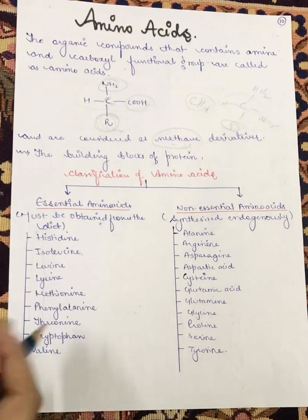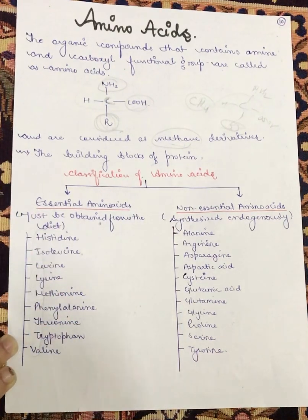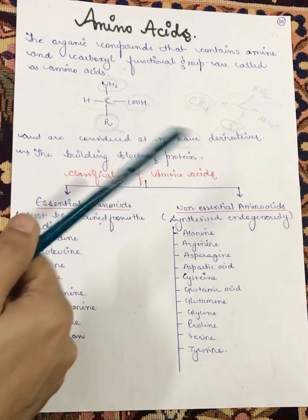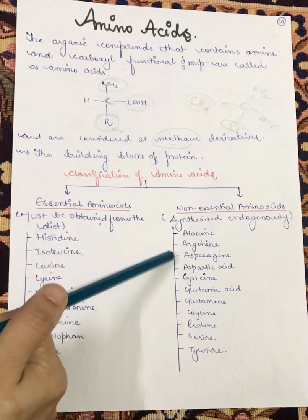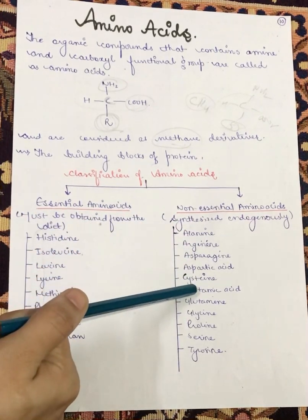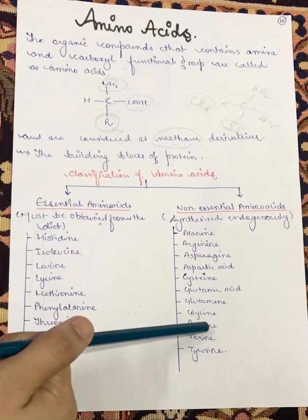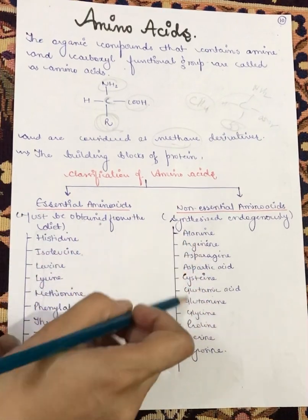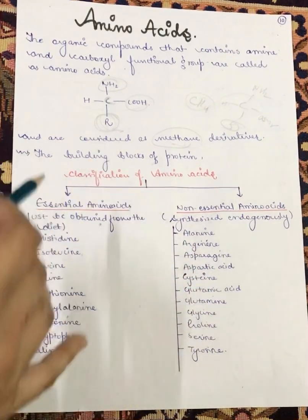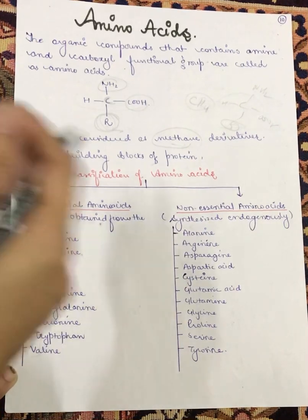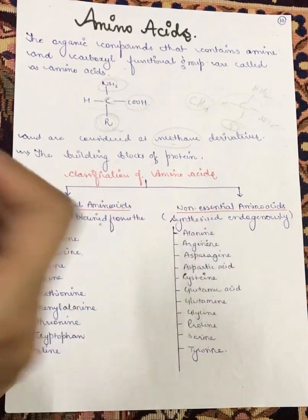The non-essential amino acids include alanine, arginine, asparagine, aspartic acid, cysteine, glutamic acid, glutamine, glycine, proline, serine, and tyrosine. You can also make a shortcut of these names to help memorize them.